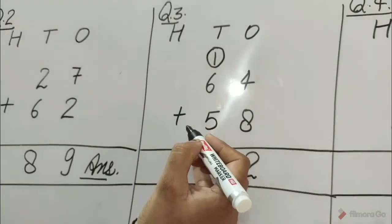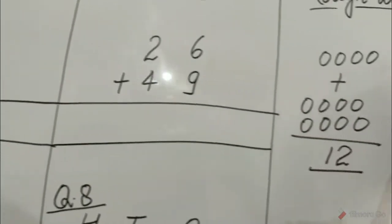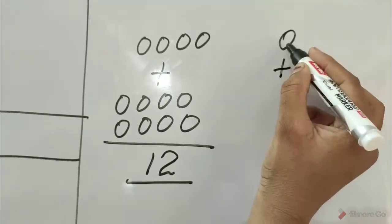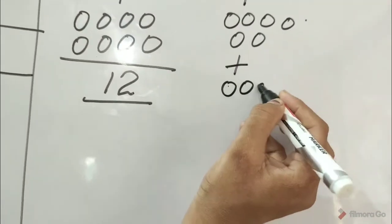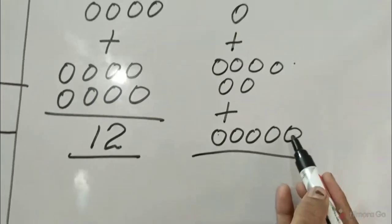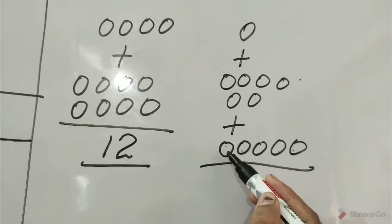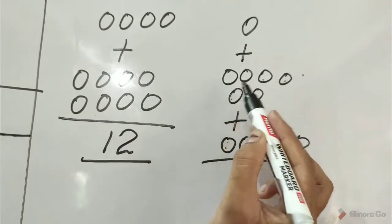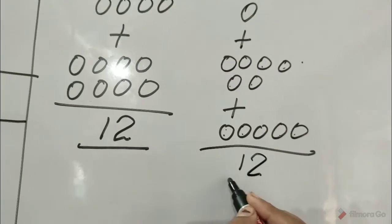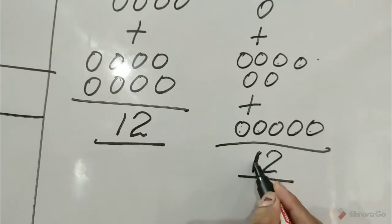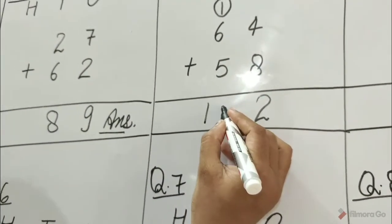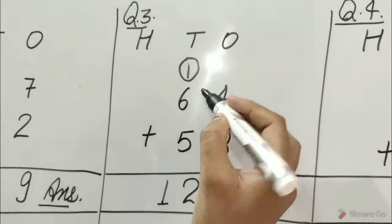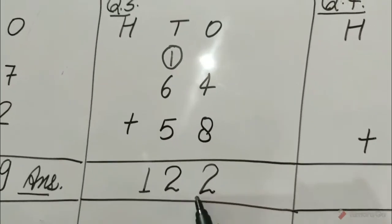Let's add tens. Count: 1, 2, 3, 4, 5, 6, 7, 8, 9, 10, 11, 12. Total numbers are 12 tens. 12 tens means 120. Hence, 64 plus 58 is equal to 122.